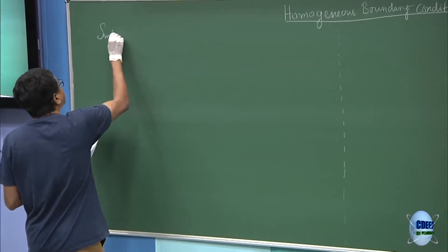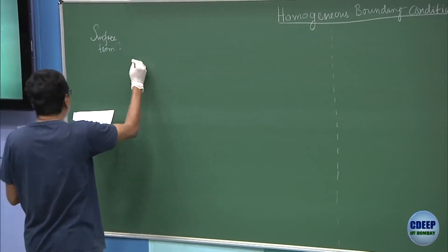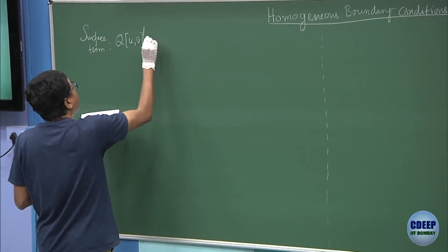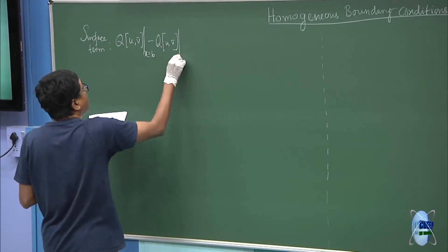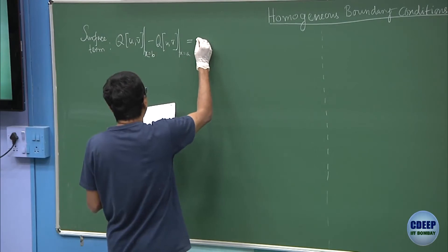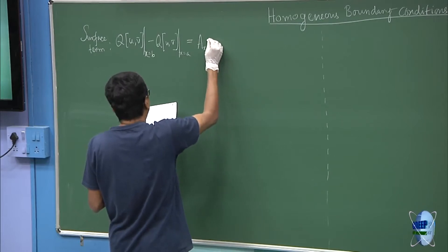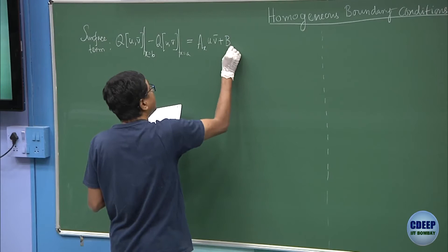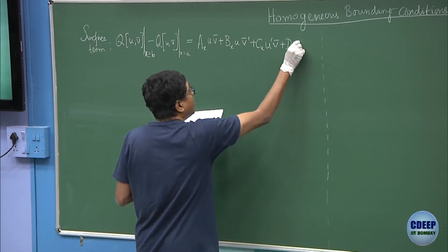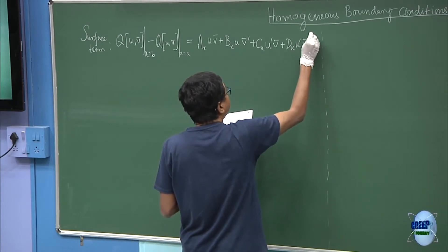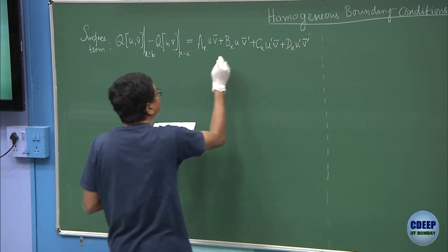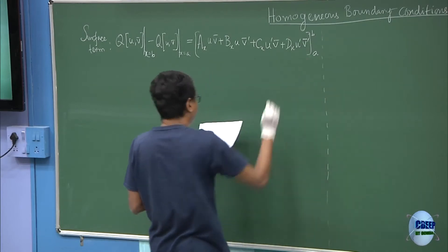The surface term in the generalized Green's identity was q(u, v̄) evaluated at x = a to b. You have to remember that this q function is a bilinear form in u, v̄ and involves u′v̄, u v̄, and u′v̄ terms — and this has to be evaluated at the two boundaries a and b.